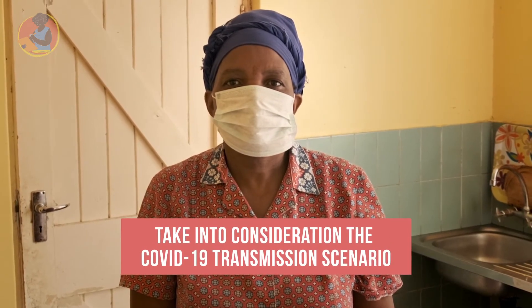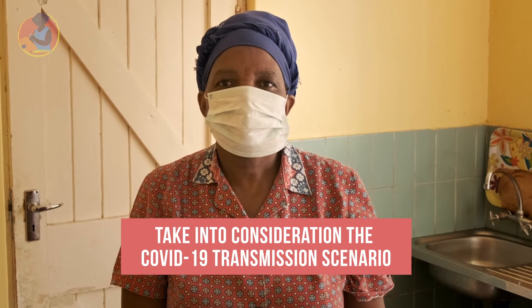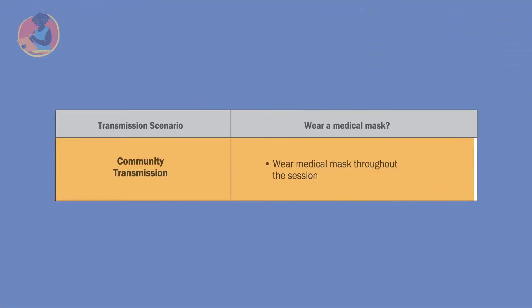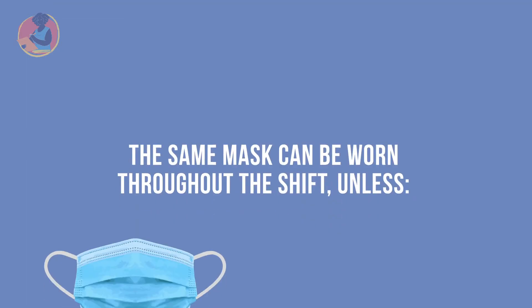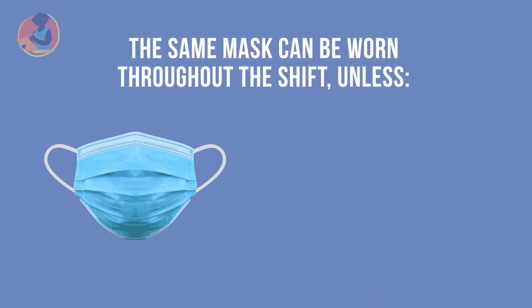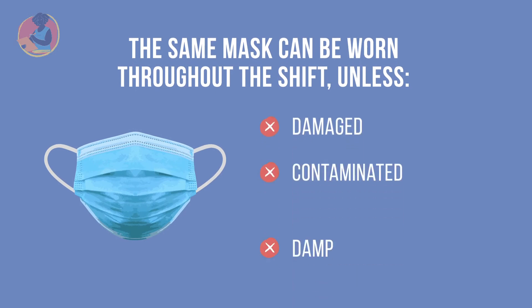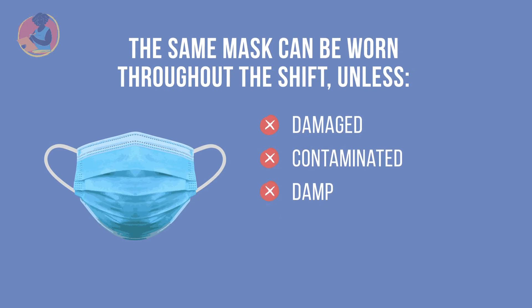To determine whether to wear a medical mask during an immunization session, first take into consideration the COVID-19 transmission scenario for the area. Is there community or widespread transmission of COVID-19? If so, the risk of exposure is high and therefore health workers should wear a medical mask throughout the immunization session. The same mask can be worn throughout the shift. However, if the mask becomes damaged, contaminated, or damp, it should be safely removed and disposed of and a new one put on. Avoid touching the mask while wearing it and do not reuse single-use masks.